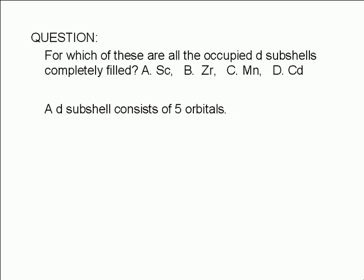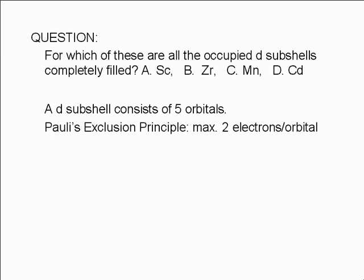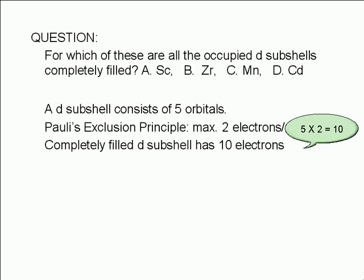A d subshell consists of five orbitals. Pauli's exclusion principle says that a maximum of two electrons can be assigned to each orbital. Therefore, a d subshell is completely filled if it has ten electrons. Five times two equals ten.